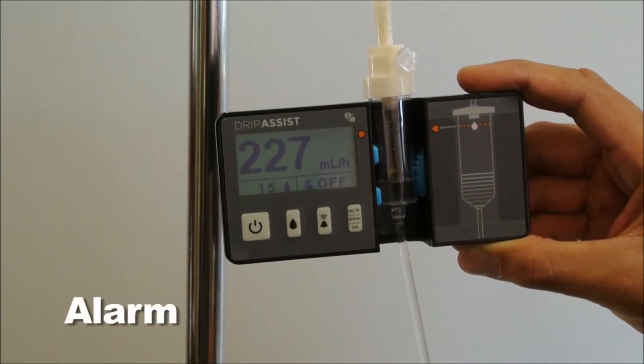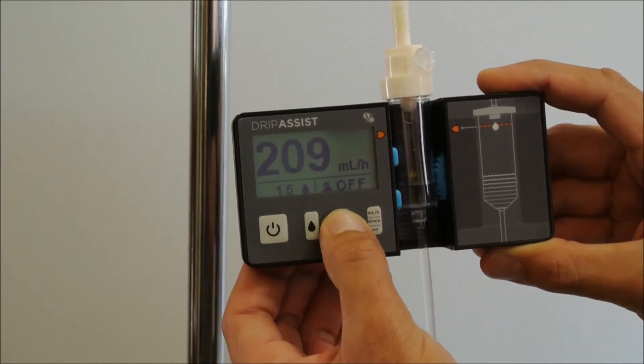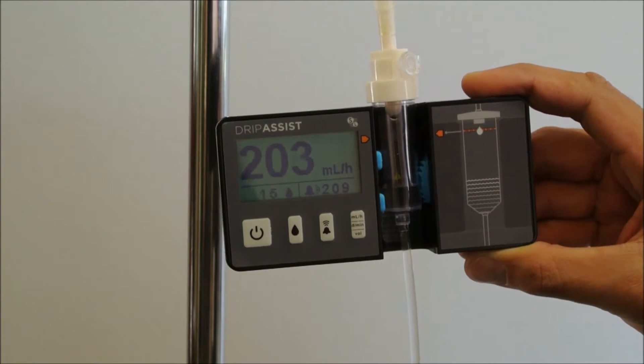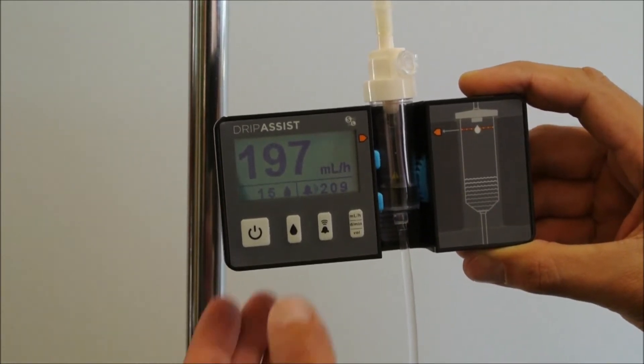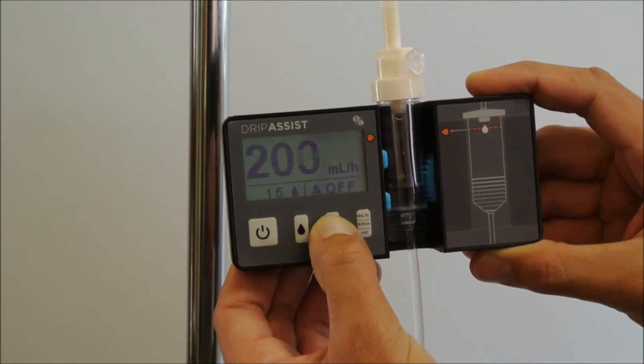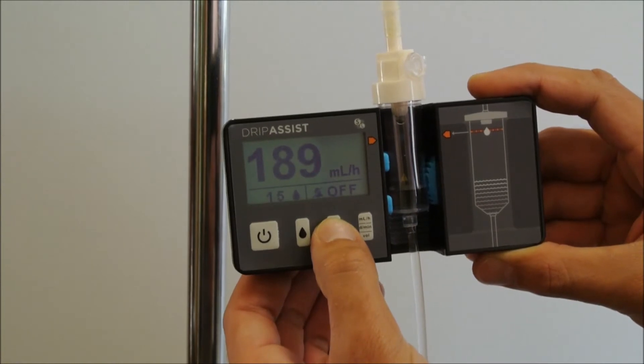Drip assist has an alarm. Here's how to use it. When you've reached a flow rate you're satisfied with, press the third button to activate the alarm. The bottom right hand part of the screen will remind you of the rate you selected. The alarm will sound if the rate changes significantly or if the flow stops for any reason.